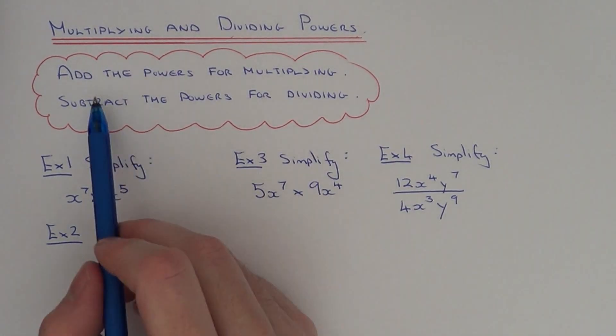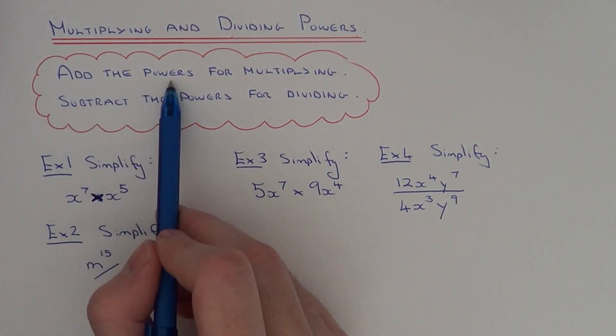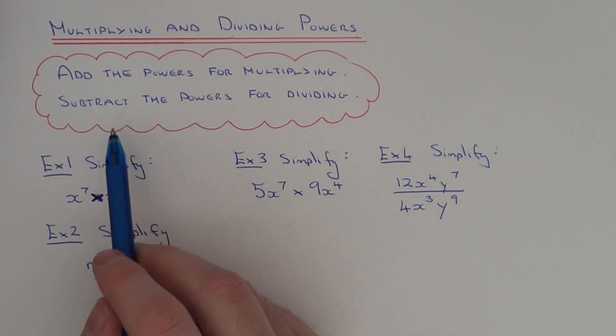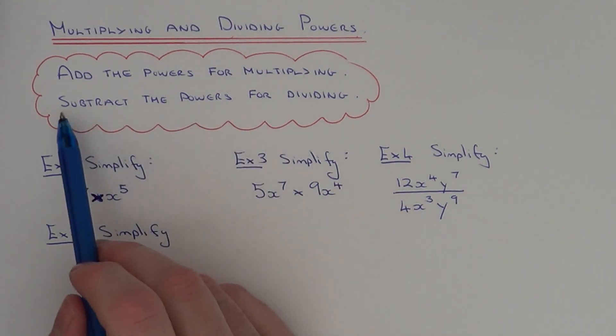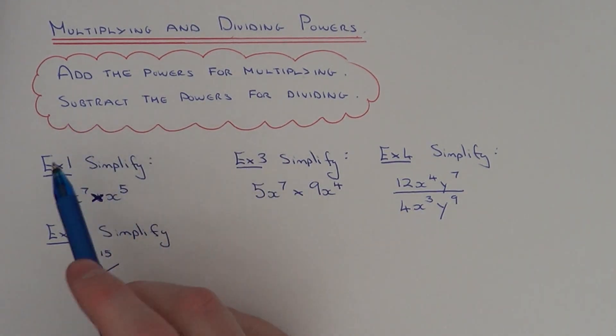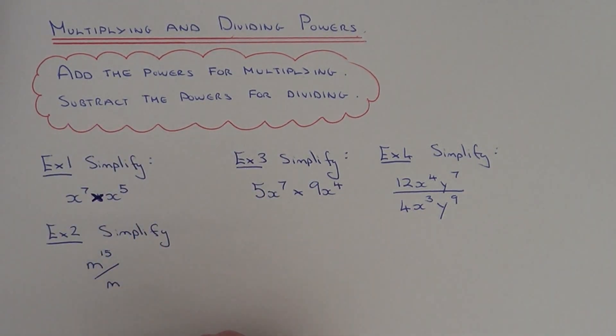If you are multiplying powers then you add the powers, and if you are dividing powers then you take the powers away.